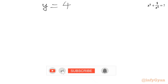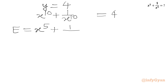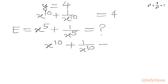So y equal to 4, and since y was our substitution, we write x power 10 plus 1 over x power 10 equal to 4. Our target expression is e equal to x power 5 plus 1 over x power 5. Now we add 2 to both sides: x power 10 plus 1 over x power 10 plus 2 equal to 6.